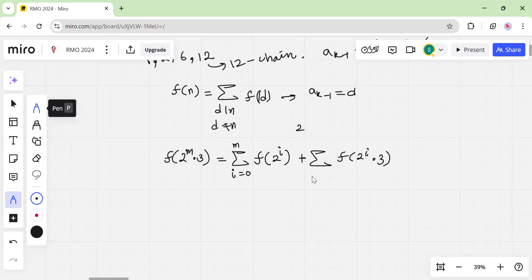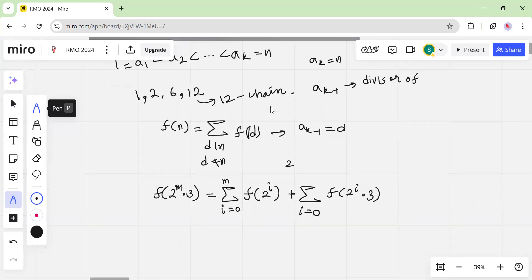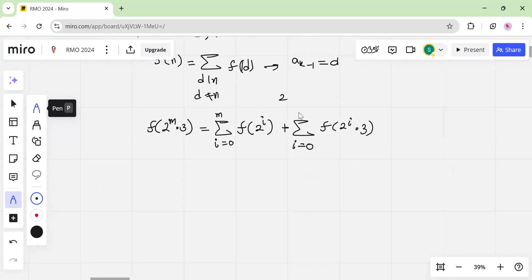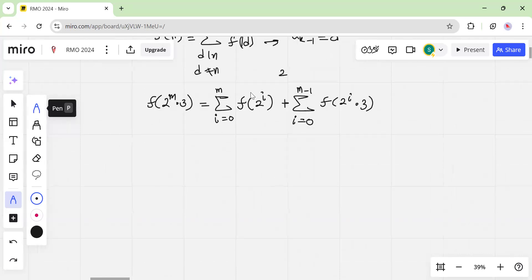So this is again, I can go from 0 to, I can go from 0 to, in this case it can't be m because then that would, then like 2 to the m times 3 is equal to n itself. So we have d not equal to n.